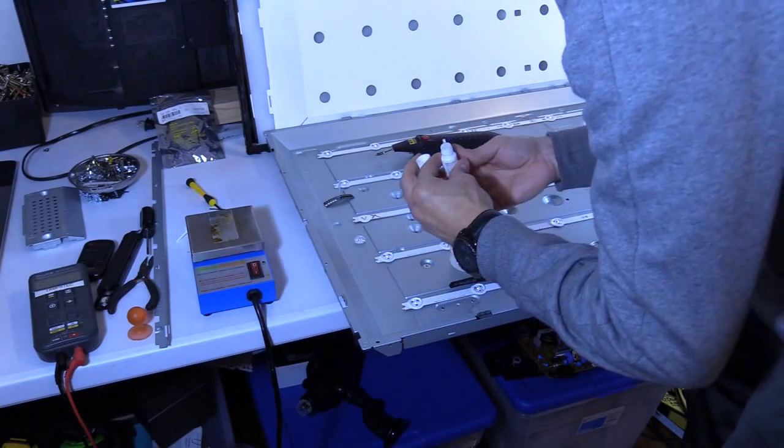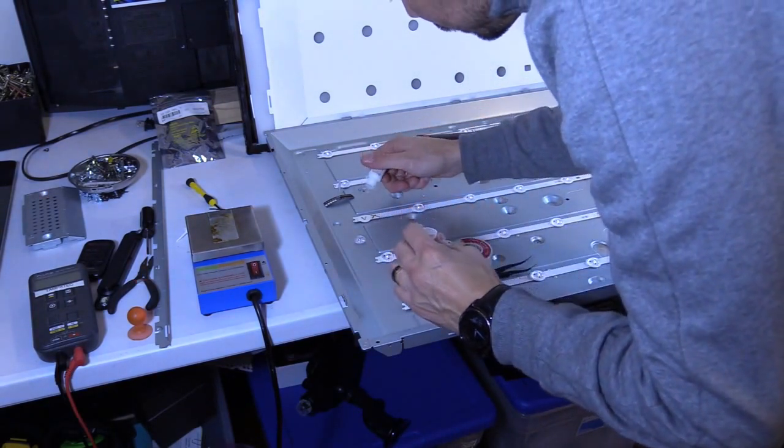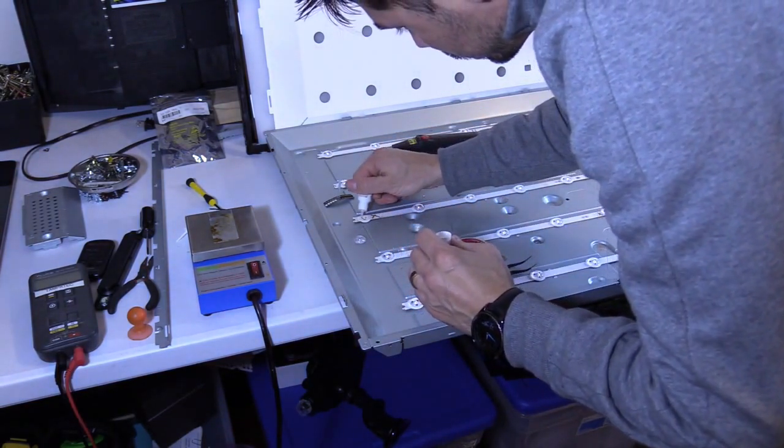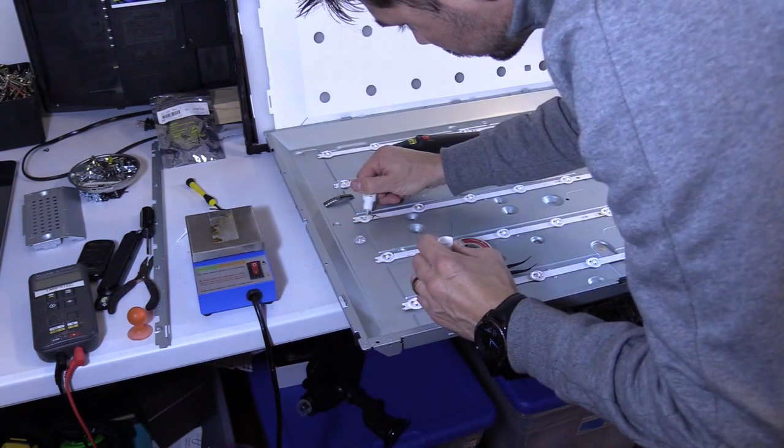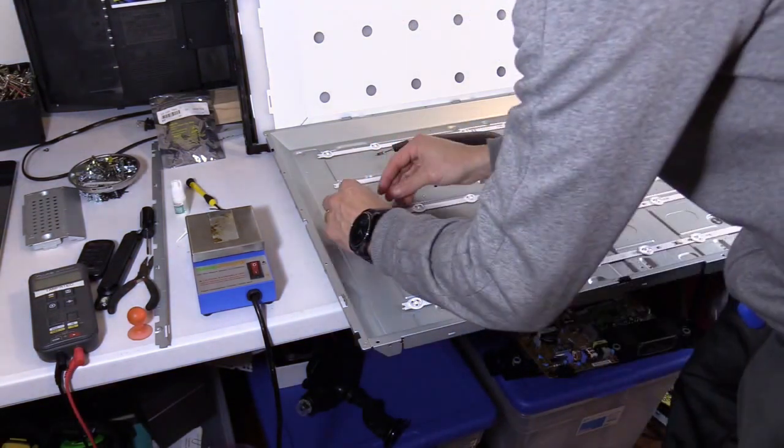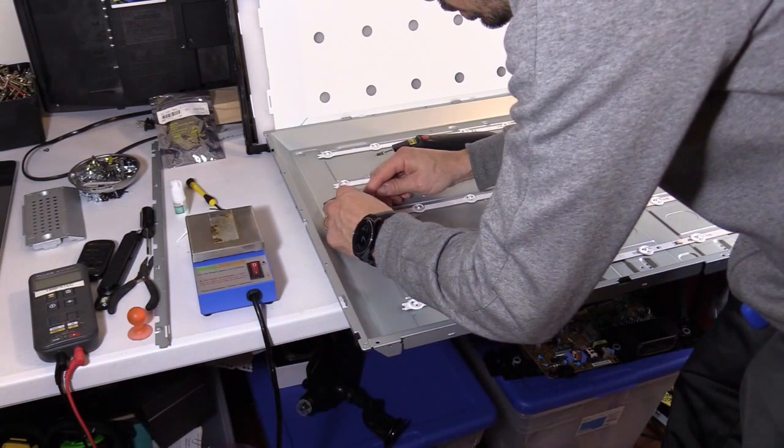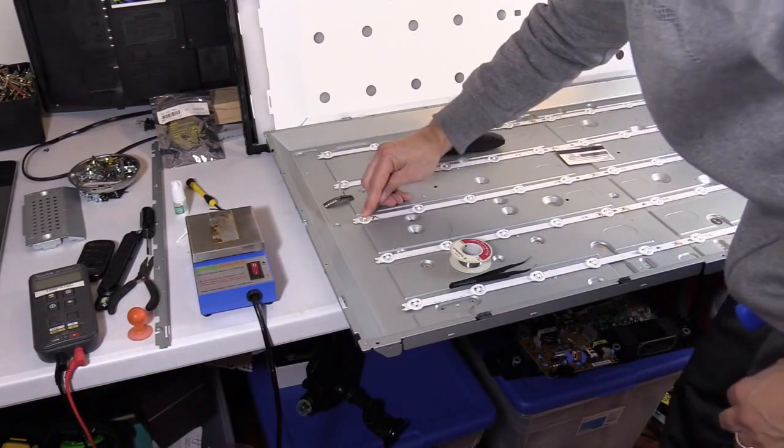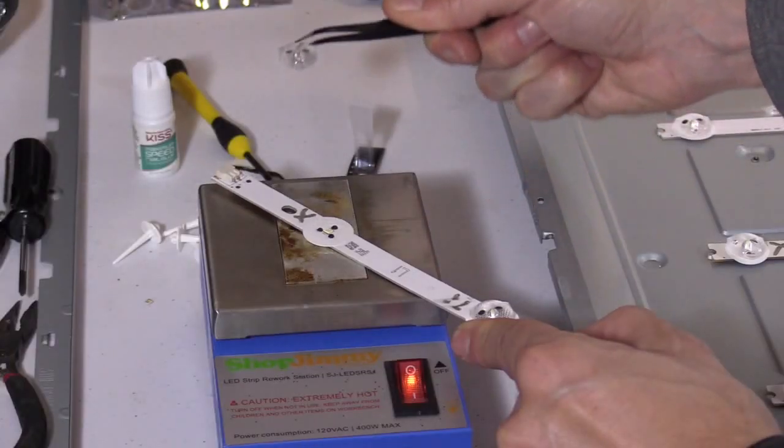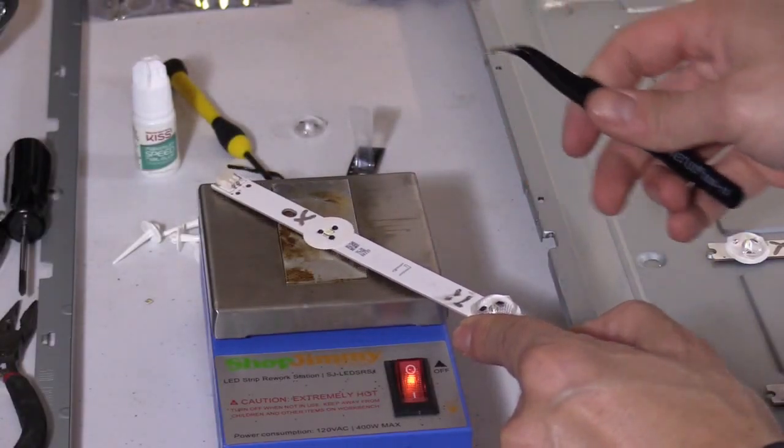We're going to use three dots of super glue to put the diffuser lens on. Go ahead and hold that in place for a good 30 seconds.